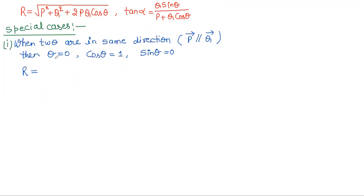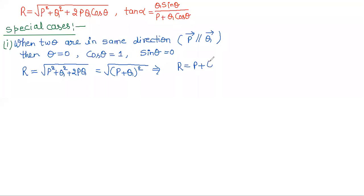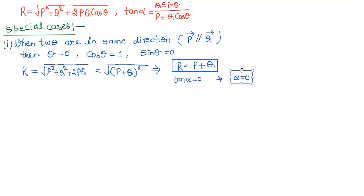In this case, R is equal to the square root of P squared plus Q squared plus 2PQ, which gives R equal to P plus Q. If both vectors are in one direction, the resultant magnitude equals the sum of the magnitudes. For direction, tan alpha equals 0, which means alpha equals 0 — the resultant direction will be along those two directions.